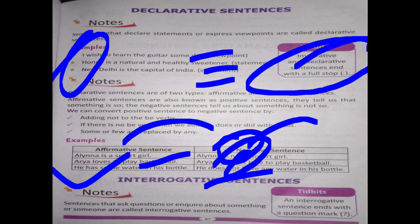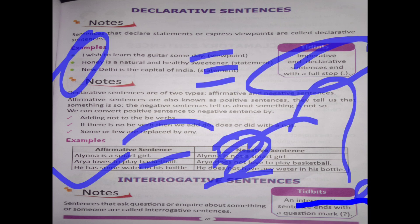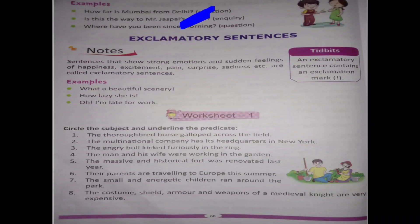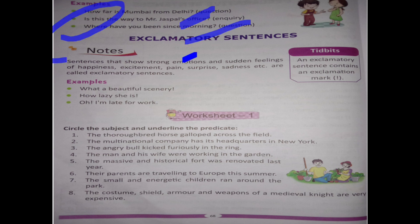Interrogative sentences: sentences that ask a question or inquire about something or someone are called interrogative sentences. They start with a capital letter but end with a question mark. For example: 'How far is Mumbai from Delhi?' — question sentence. 'Is this the way to Mr. Jaspal's office?' — inquiry. 'Where have you been since morning?' — WH word used, ends with a question mark.